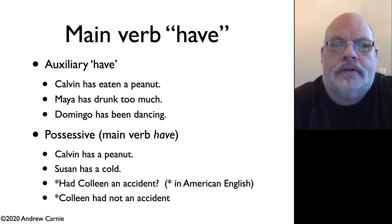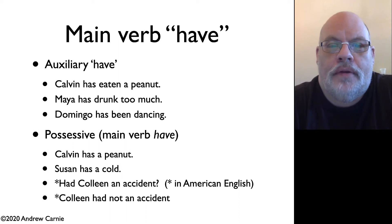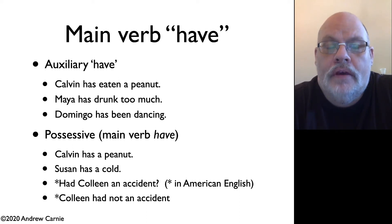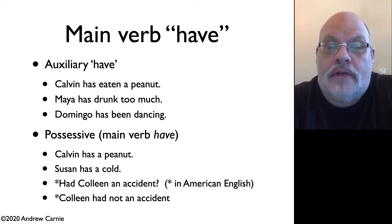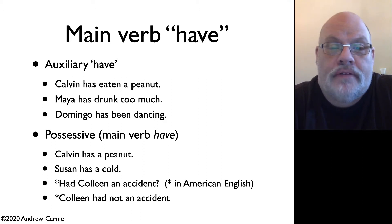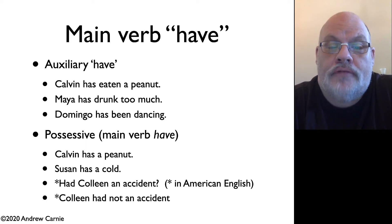Take, for example, the verb have. We already have looked at the auxiliary have that shows up in perfects, as in: Calvin has eaten a peanut, Maya has drunk too much, Domingo has been dancing.